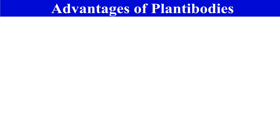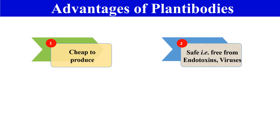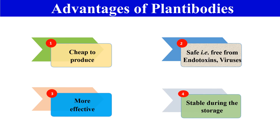Now, what are the advantages of plantibodies? First, as I mentioned, they are cheap to produce — it is a low production cost procedure. Next, they are safe: plantibodies are free from any kind of virus, bacteria, or endotoxins, so they are safer. Another advantage is that plantibodies are highly effective, and it has been found that they are also stable during storage when kept for future use.